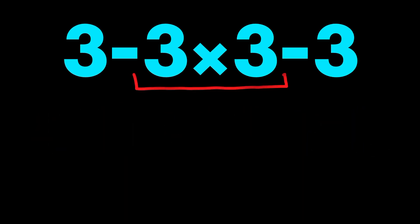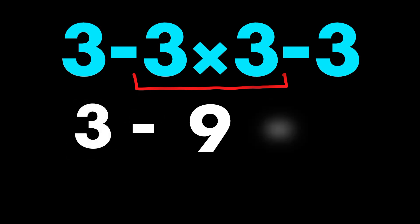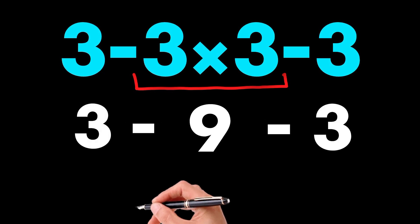Three times three equals nine. Now your expression is three minus nine minus three. Let's go left to right.